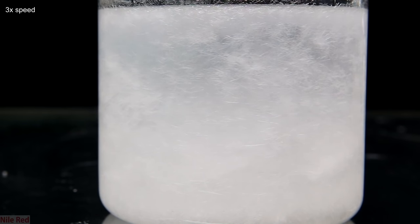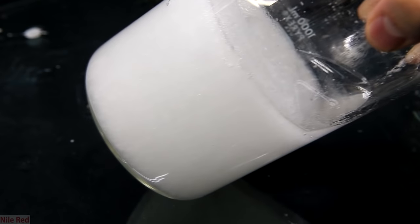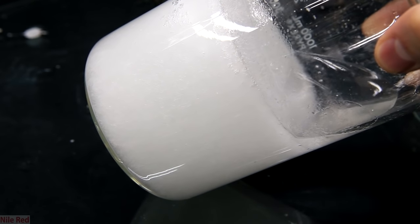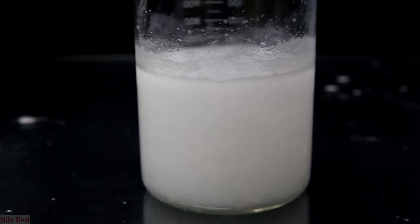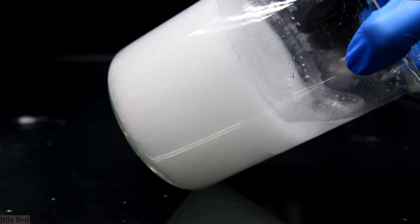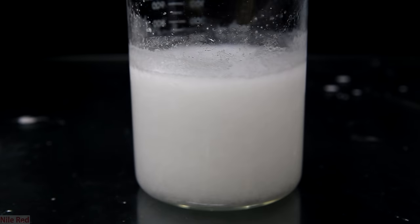Eventually, so many crystals had formed that it became completely white. After it had completely cooled down to room temperature, it had pretty much solidified. To further precipitate everything, it was placed in the freezer and now we have our completely recrystallized solution.